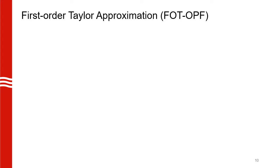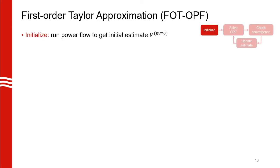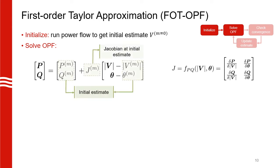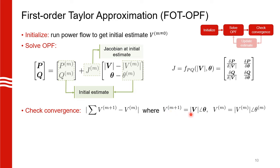Now, we will look at the first linearization, which is the first order Taylor approximation. This method is commonly used in transmission systems, but not so much for distribution grids. We first get our initial voltage estimate by running a power flow problem. Next, we solve the OPF where the power flow is linearized around our initial voltage estimate. For this, you can see that we need to calculate the Jacobian, which is basically the partial derivative of P and Q with respect to our voltage variables. The third step is to check for convergence, which is the deviation of our new voltage phasor from the initial voltage phasor. Finally, we update the estimate by again running a power flow problem.